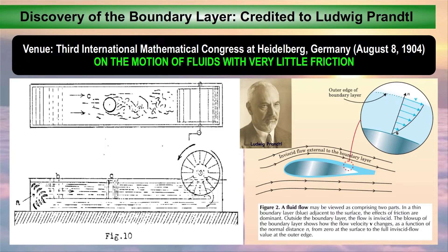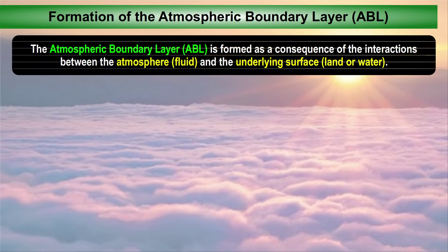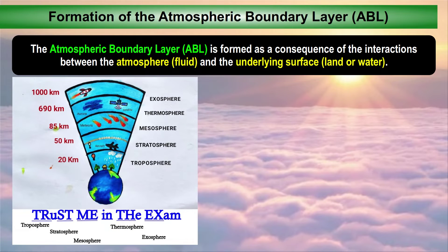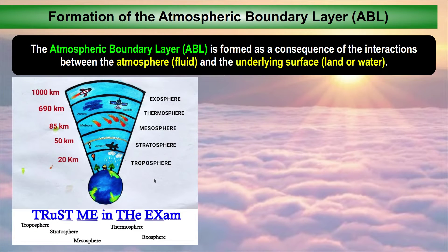Even though it was worth the Nobel Prize, he did not get it. But he opened up a new challenge and a new scientific framework for investigation of the boundary layer. Now, how does the atmospheric boundary layer get formed? For formation of a boundary layer, we need a fluid and a surface. In the case of the atmospheric boundary layer, the earth's surface acts as the solid surface and above it, the atmosphere acts as the fluid. The atmosphere flowing on top of the earth's surface gives rise to the formation of the atmospheric boundary layer.